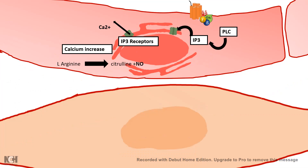Since nitric oxide is a diffusable molecule, it diffuses out from the blood vessel cells and into the nearby muscle cells. It's important to note that nitric oxide is a transient signal because its half-life is only a few seconds. Suddenly, the muscle cell encounters a large amount of nitric oxide.